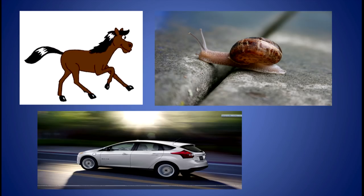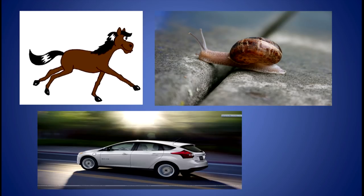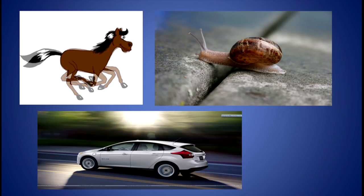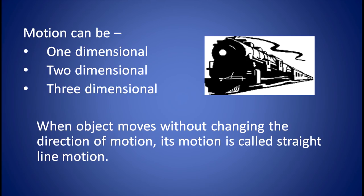Dear learners, today we will discuss a chapter on motion in a straight line. We see things moving around us. We live in a constantly moving world. Therefore, study of motion is essential. A continuous change in the position of the object with respect to observer is called motion. Motion can be one dimensional, two dimensional or three dimensional. When object moves without changing the direction of motion, its motion is called straight line motion.